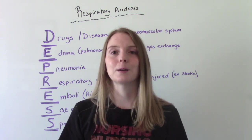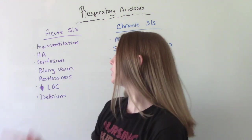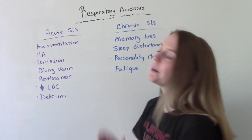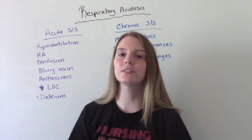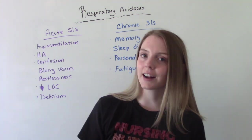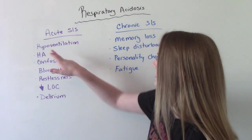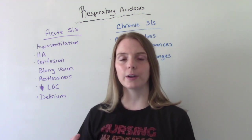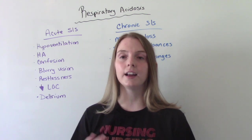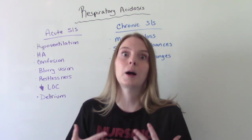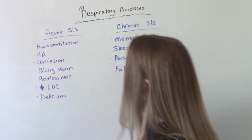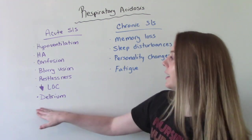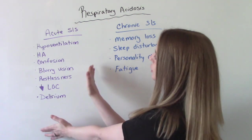Now let's talk about the signs and symptoms — the acute form and the chronic form. For acute signs and symptoms, a lot of these make sense. Hypoventilation — not taking deep or frequent enough breaths. The lack of oxygen can cause headaches, confusion, blurry vision, and overall restlessness. When we don't get enough oxygen, the patient knows it — their body says there's a problem — so they can become restless and anxious. They may have a decreased level of consciousness and can even go into a coma if we don't intervene. They can also become delirious due to the lack of oxygen to the brain.